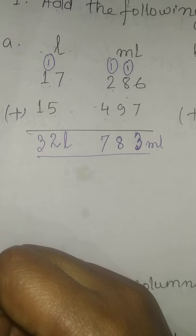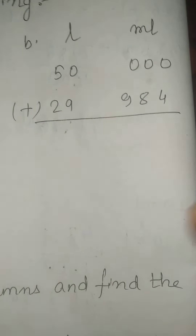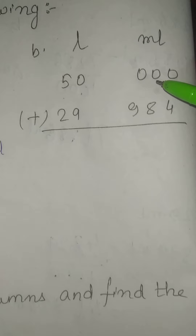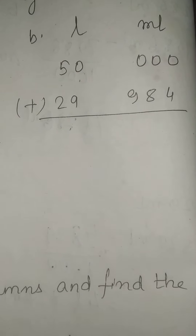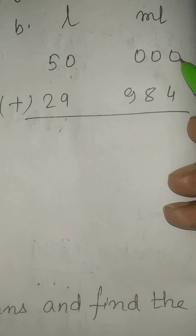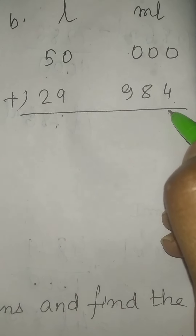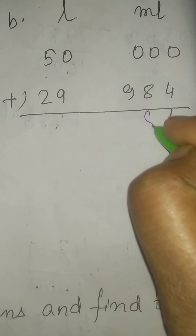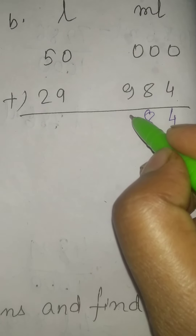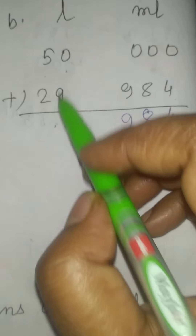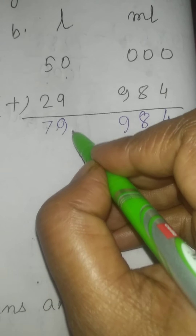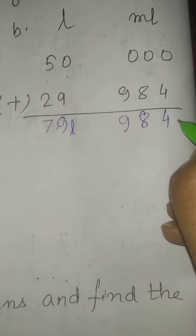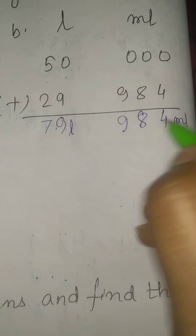Is it clear, students? To make it more clear, we are going to solve the next question, that is B: 50 litre 000 milliliter and 29 litre 984 milliliter. So now you add 0 plus 4 is 4, 0 plus 8 is 8, 0 plus 9 is 9. Here 0 plus 9 is 9, and 5 plus 2 is 7. So the answer we have got is 79 litre, 984 milliliter.